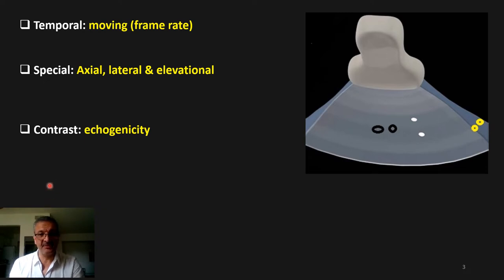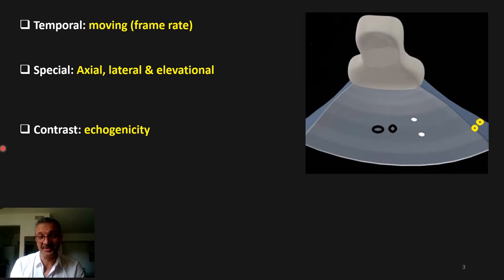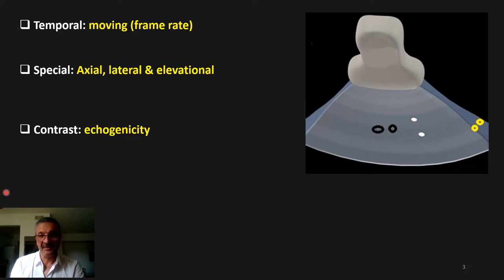To answer this question, let's first look at what resolution means in ultrasound. Resolution means the capability and sensitivity of the ultrasound machine to create a structural image that is as close as possible to the real structure. We have three types of resolution: temporal, spatial, and contrast.